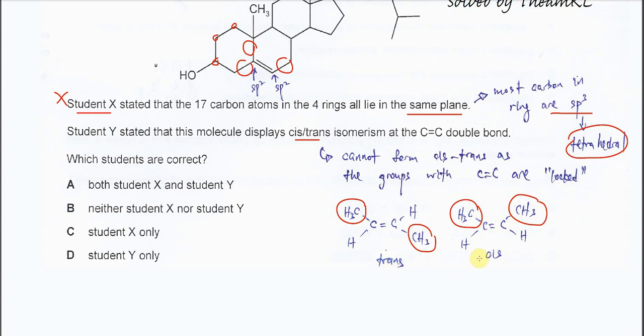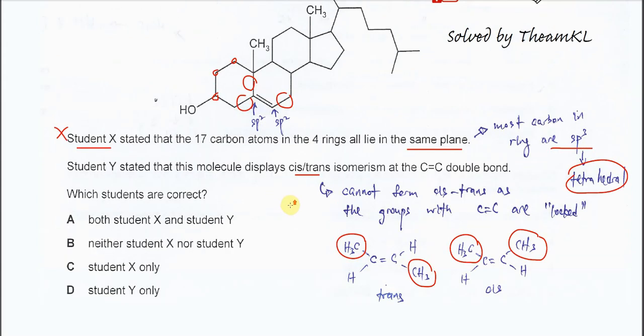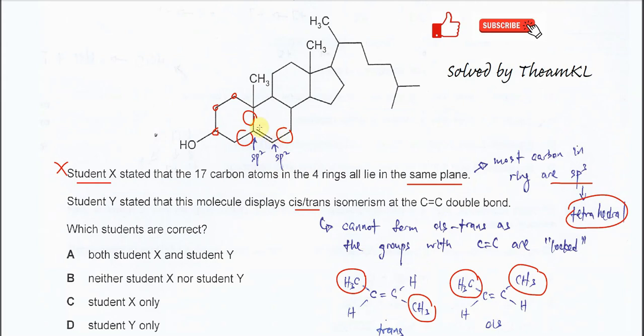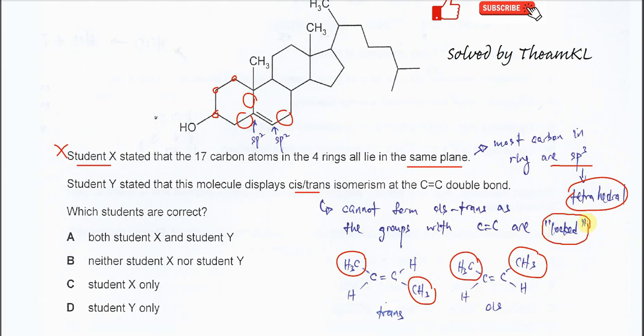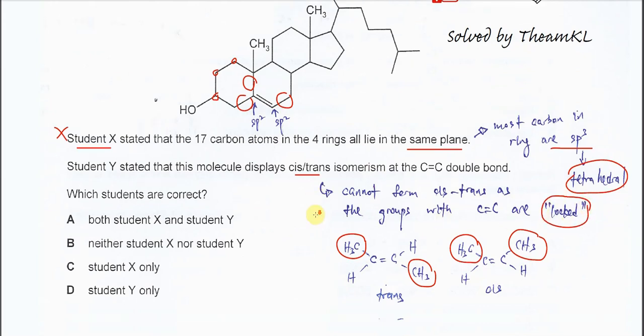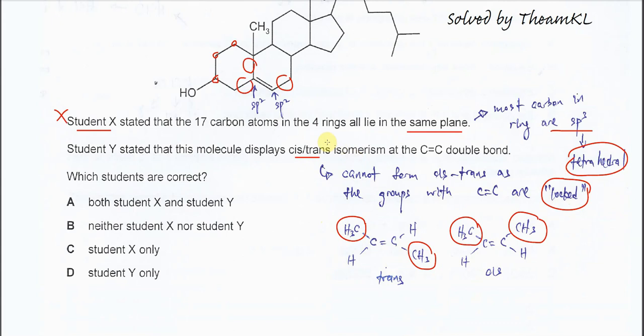So cis-trans can be formed when the groups can change, means either same side or different side. But in this structure, you see the C=C double bond, all the groups here are locked. So it cannot really change. So when it cannot change, how to form cis-trans? That's why Student Y is also wrong.